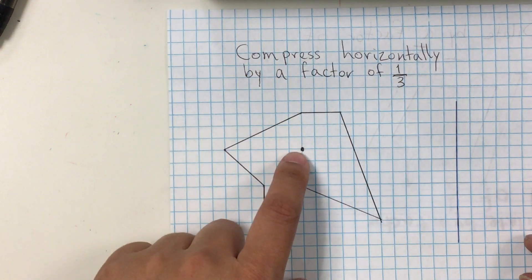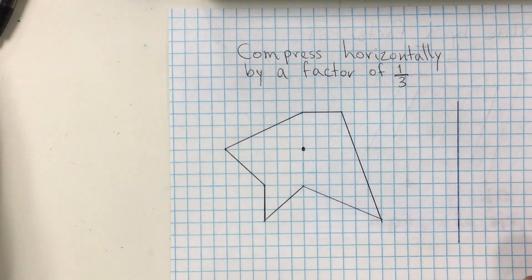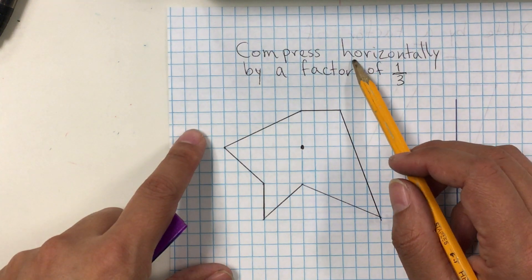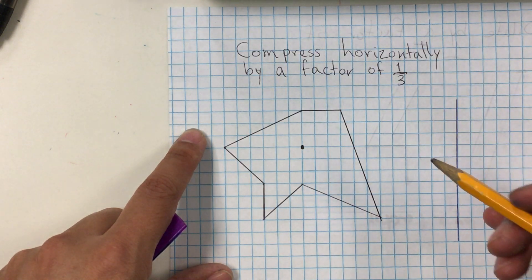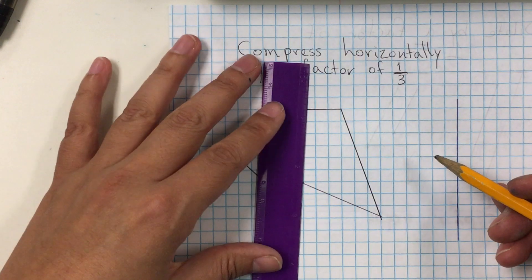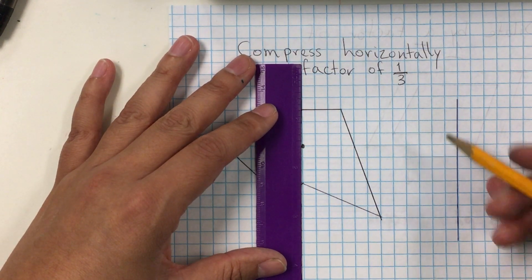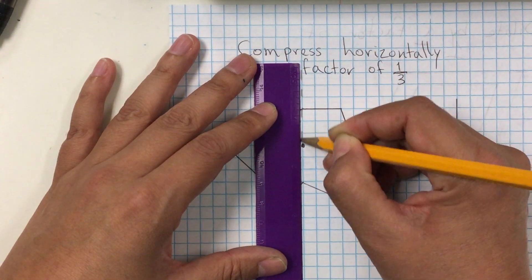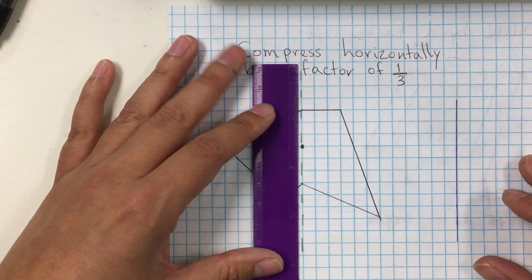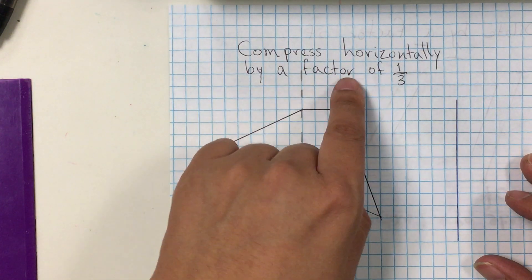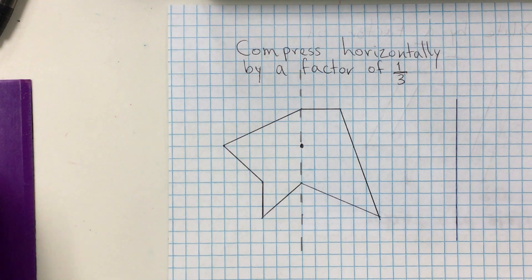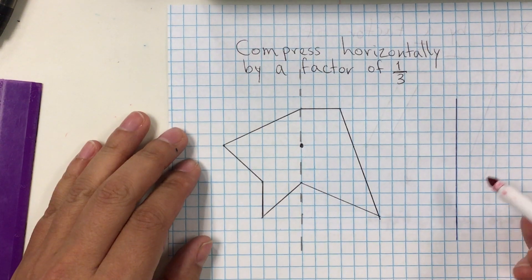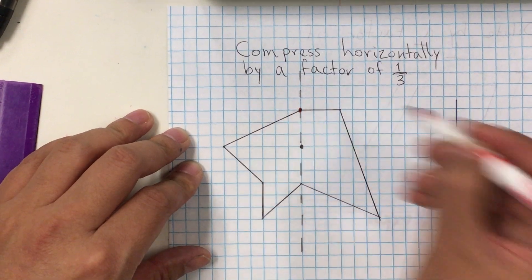In this example it says compress horizontally by a factor of one-third, about that point. Remember that if we're doing it horizontally, we need to draw a vertical line through the point. It says by a factor of one-third, which means all my points are going to get closer to that vertical line by reducing each horizontal distance to one-third.